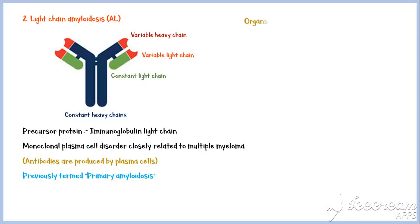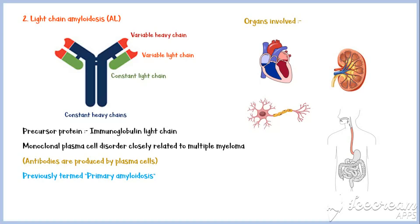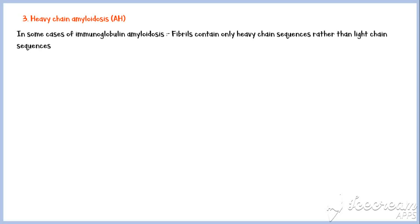Major organs involved are the heart, kidney, peripheral nerves, and the gastrointestinal system. In some cases of immunoglobulin amyloidosis, the fibrils contain only heavy chain sequences, rather than light chain sequences.